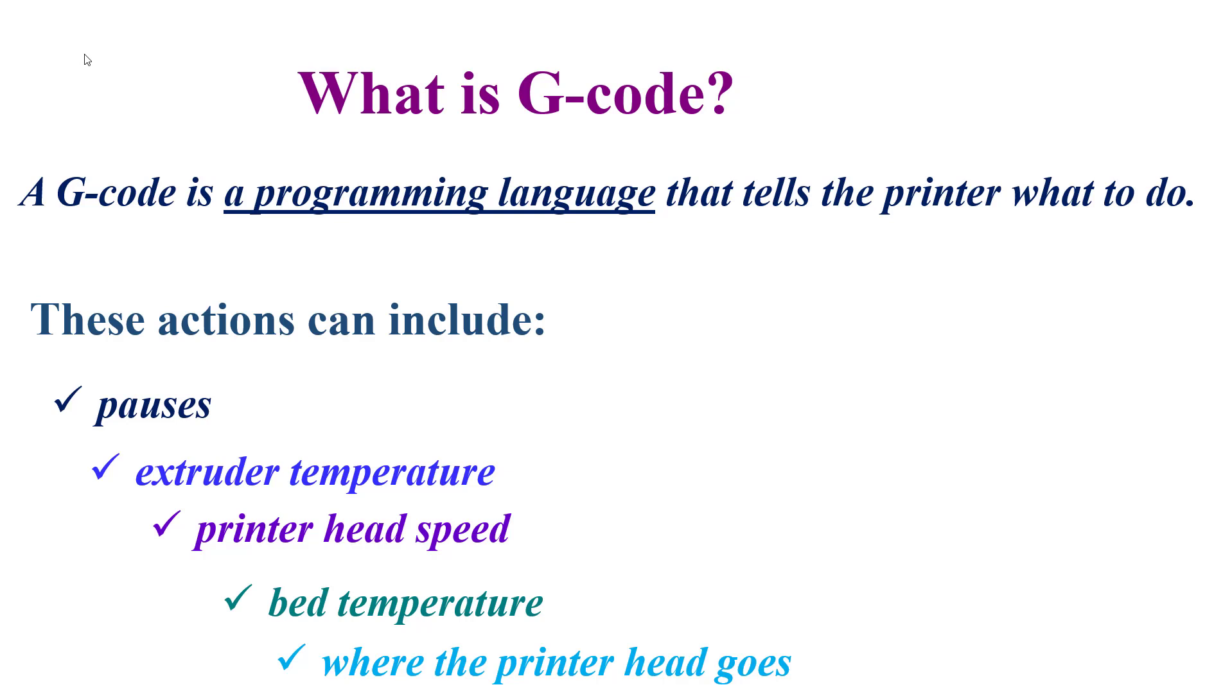The next question: what are the actions that can be assigned in G-code? These actions for 3D printing can include pauses, extruder temperature, printer head speed, bed temperature, and where the printer head goes. These actions are related to the printing process.